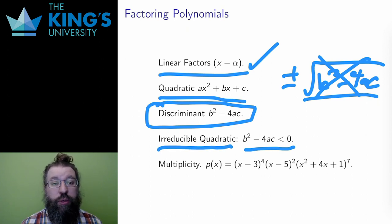So, to determine if a quadratic is irreducible, I test the discriminant to see if it is negative. The good news about factoring polynomials is that there are no irreducible pieces other than quadratics. All real polynomials factor into linear and irreducible quadratic pieces.